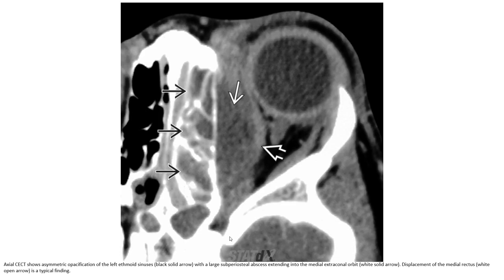This is the first case: axial contrast-enhanced CT showing asymmetric opacification of the left ethmoid sinus with a large superior subperiosteal abscess extending into the medial extraconal orbit. Displacement of the medial rectus muscle is typical for a superior subperiosteal abscess.